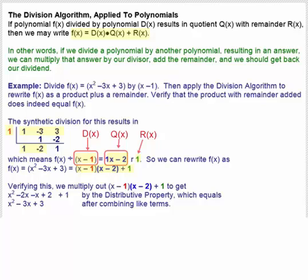And we can verify this by multiplying x minus 1 times x minus 2 and adding 1 back. And when we do that, we end up getting x squared minus 3x plus 3. So it does work out. Now there's more implications to this than just being able to rewrite f of x as a product plus the remainder.